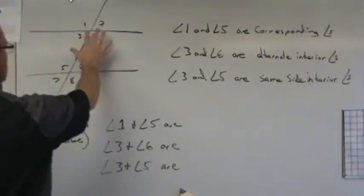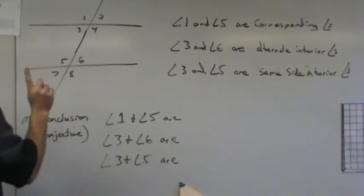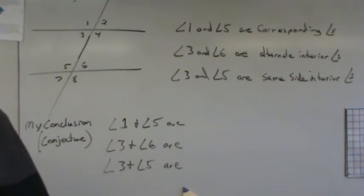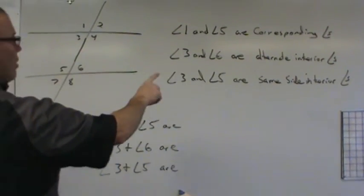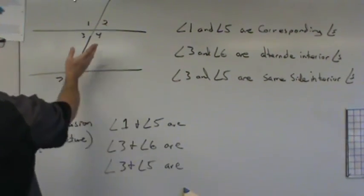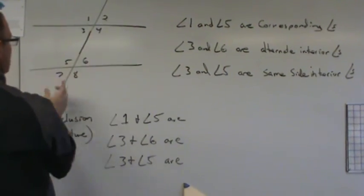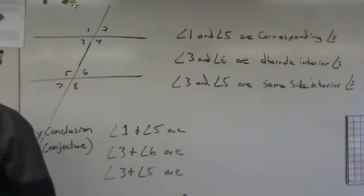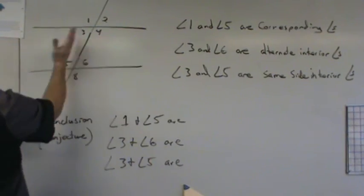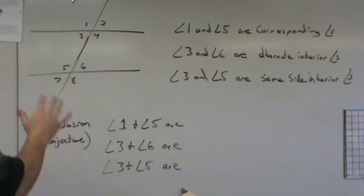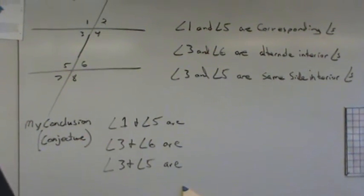It says angle one and five are what you call corresponding angles. This is the hardest one. Corresponding angles is the hardest one. Why? Because angle three and six, it tells you what they are. Alternate interior angles. They're on alternate sides of a transversal and they are both interior. Angle three and five, same side interior. They're on the same side and they are interior. The names give it away with the exception of corresponding angles.